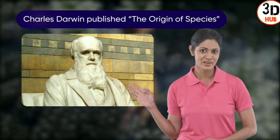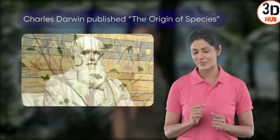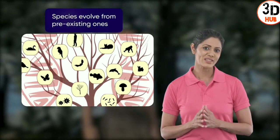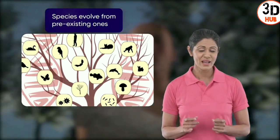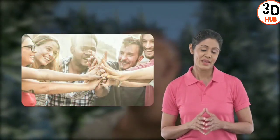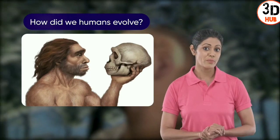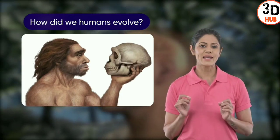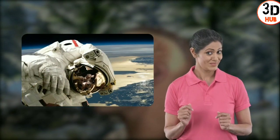In 1859, Charles Darwin changed the way we think about the origins of life. Instead of surging spontaneously, new species appeared through the complex process of evolution by natural selection. But what about us humans — did we also evolve from other species more primitive than us? How did we end up being the advanced species we are today?